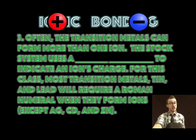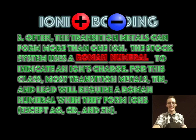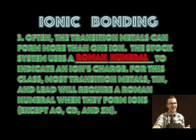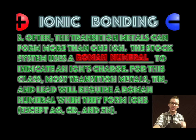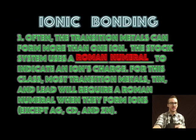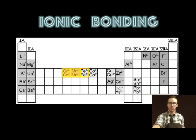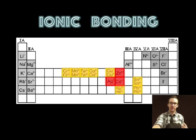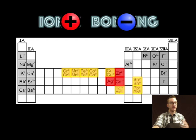Now it's important to recognize that your transition metals can form more than one ion. We're gonna use what's called the stock system which uses a roman numeral to indicate an ion's charge. For our class most transition metals tin and lead will require a roman numeral when they form ions. Some big exceptions that you need to be aware of are silver cadmium and zinc.